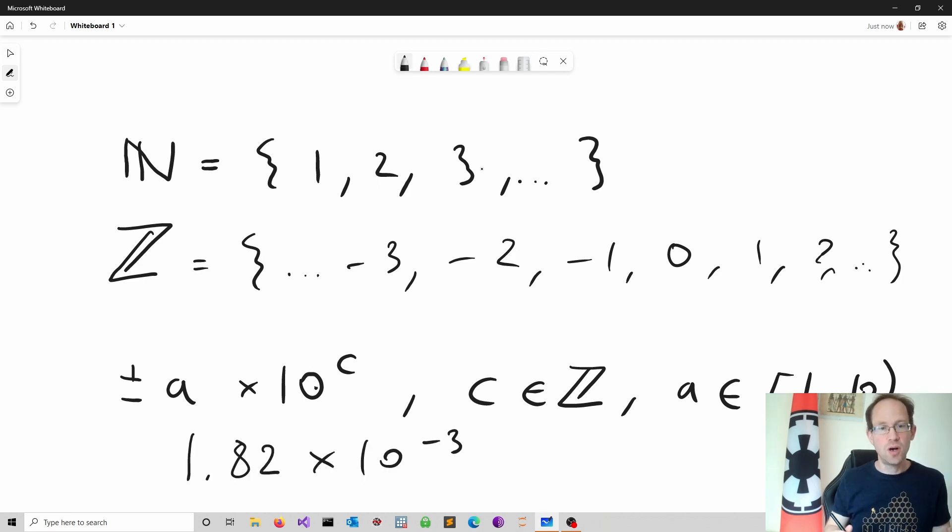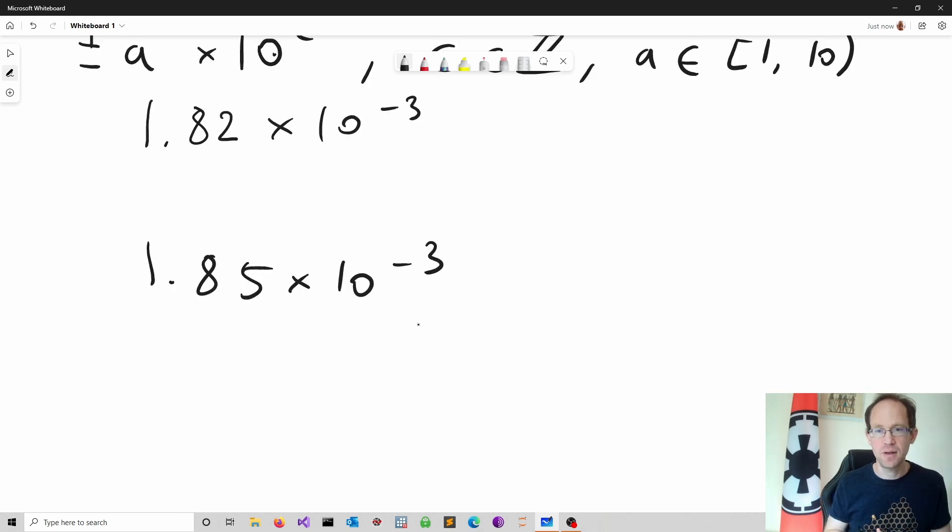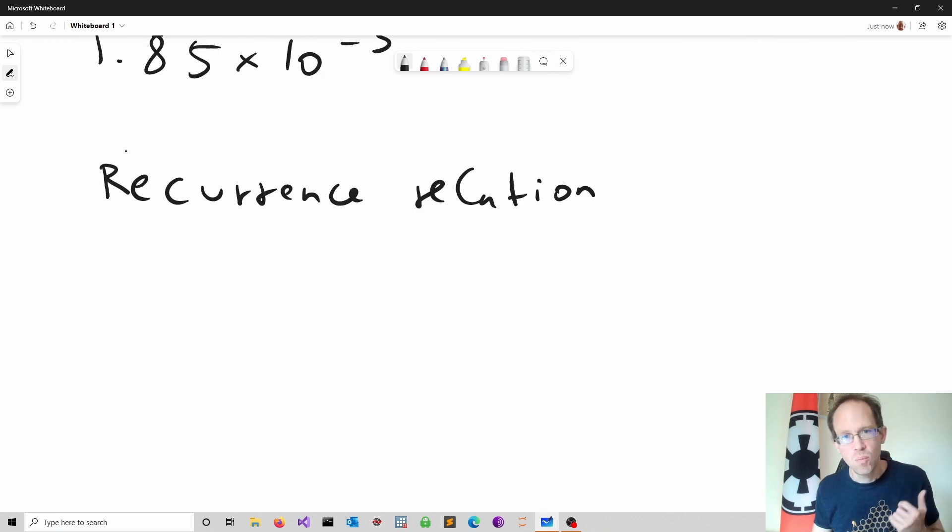I'm sure you are familiar with rounding. For instance, showing 1.82 times 10 to the power of minus 3 with two significant figures refers to 1.8. In contrast, 1.85 times 10 to the power of minus 3 is rounded up to 1.9 times 10 to the power of minus 3. Moving on to recurrence relation.